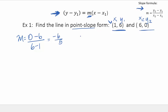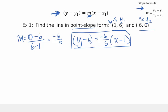So as I take this equation, I say y minus the y-coordinate, which is 6, equals negative 6 fifths x minus the x-coordinate, which is 1. So here's one answer for this problem. That is that line in point-slope form.